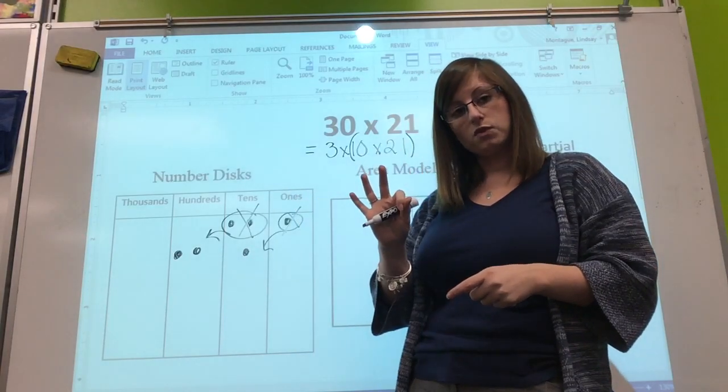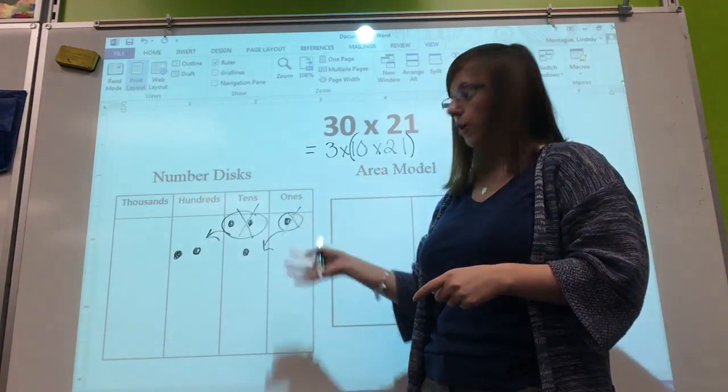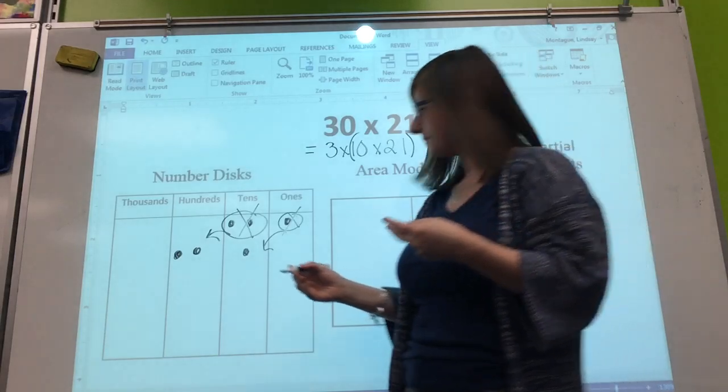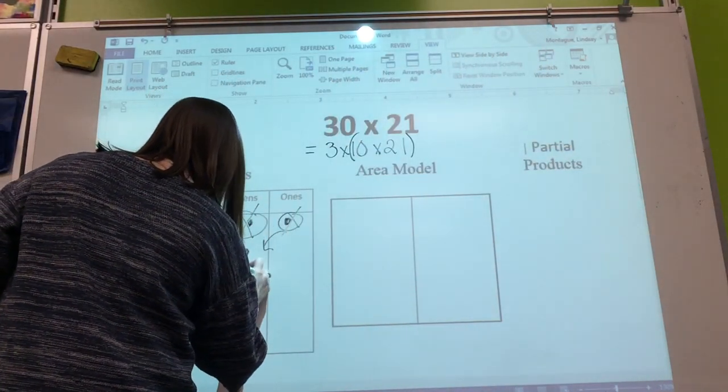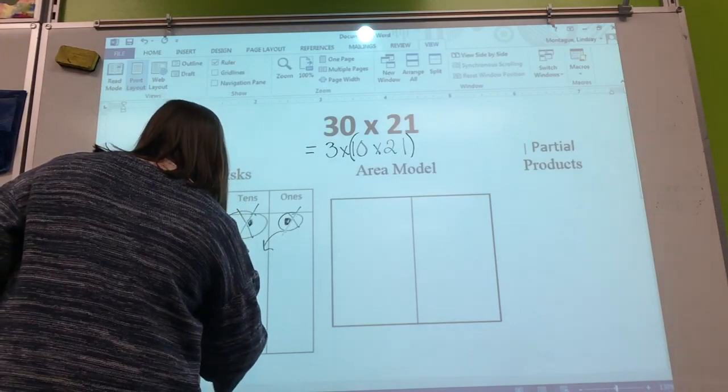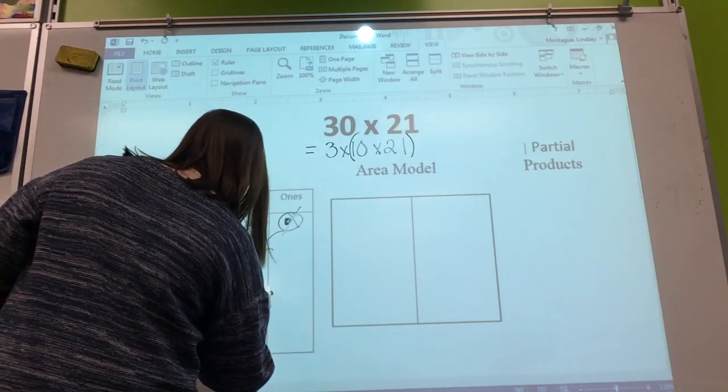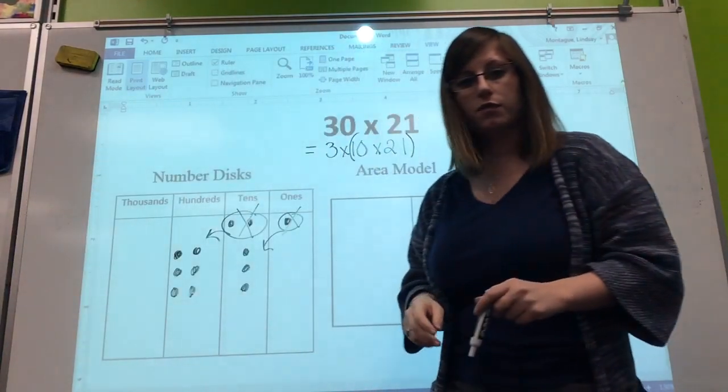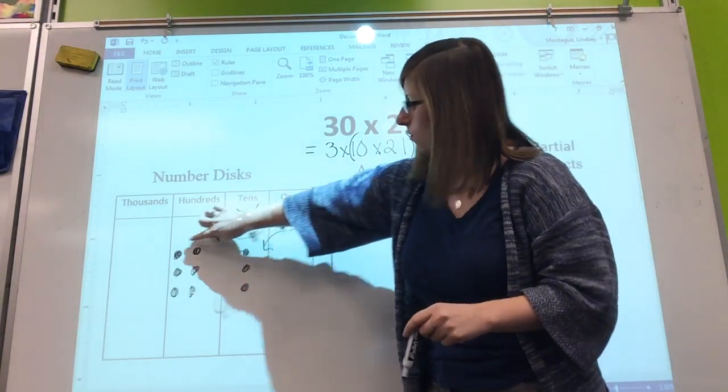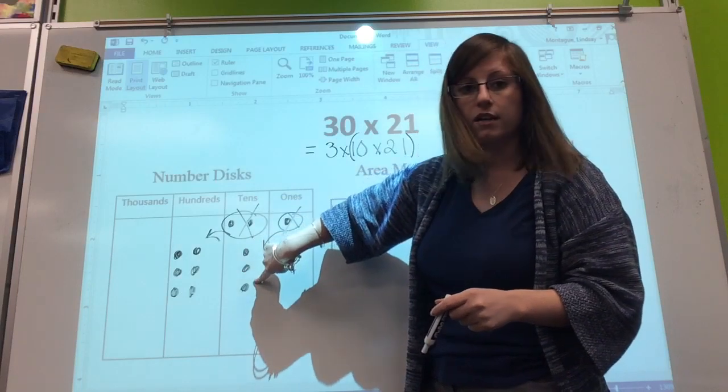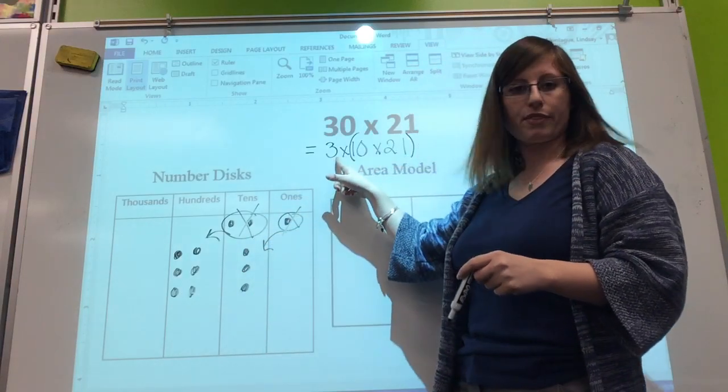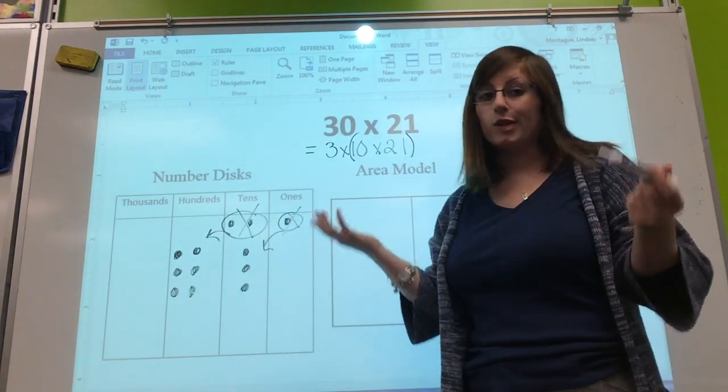Right now I have one group of 210, but if I'm multiplying by 3, I need 3 groups of 210. So if I have one already, I'm going to make two more - one more group of 210 and a third group of 210.